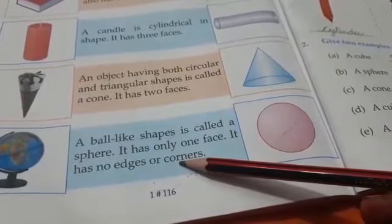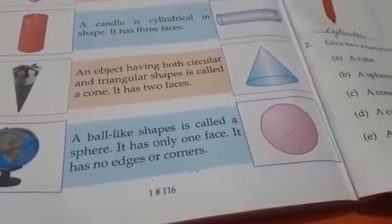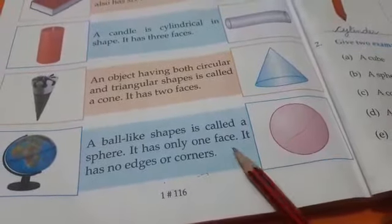A ball-like shape is called a sphere. It has only one face. Iska one face hota hai kyunki aap ghumaoge to iska ek hi space ban jayega, face ho jayega. No edges, no corners. Ye hai hamara sphere.